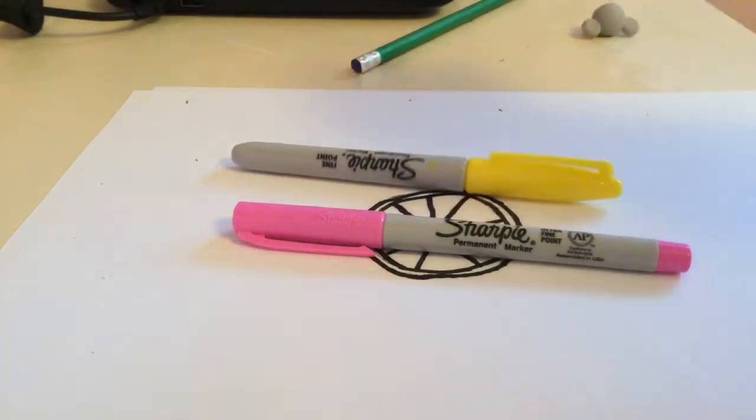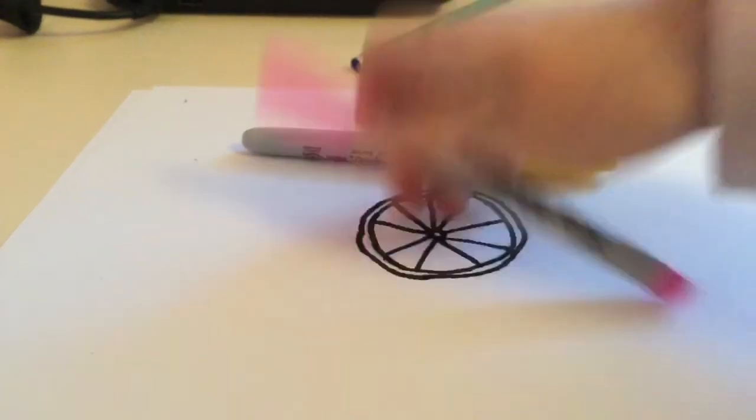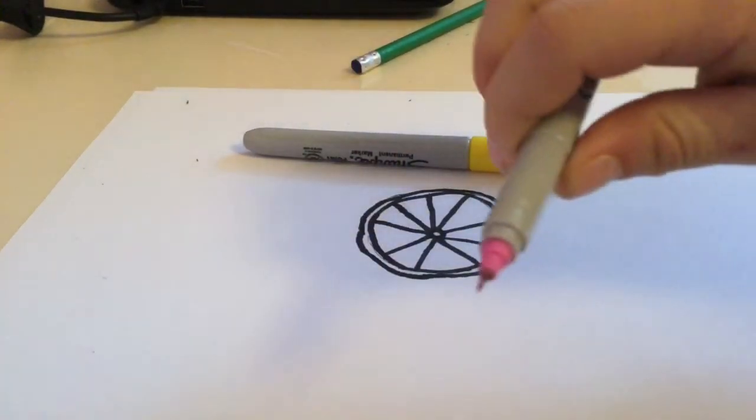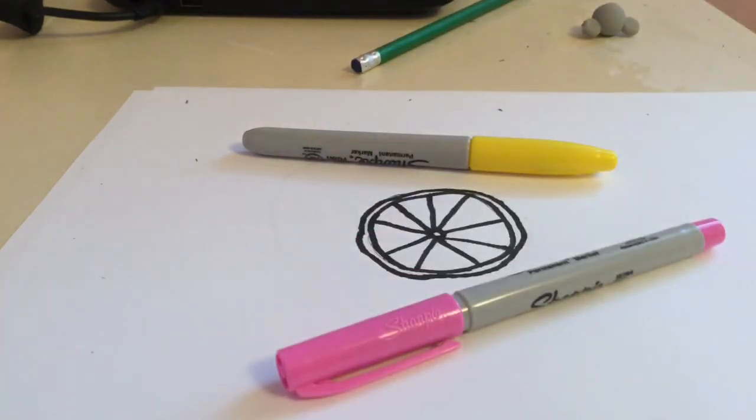Then I'm gonna use this yellow. I'm going to time lapse this part because I'm using this thin marker and I don't have any other pink. Let's just start coloring.